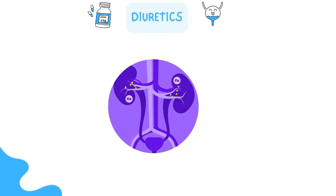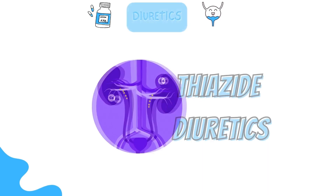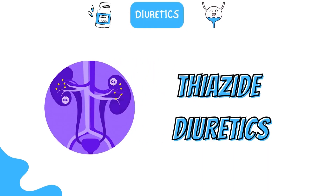In the last video, we discussed what diuretics are and how they work. In this video, we will learn about the first class of diuretics drugs, that is thiazide diuretics, in detail.